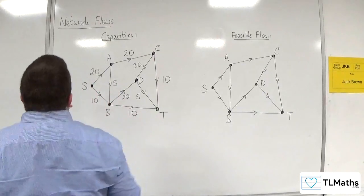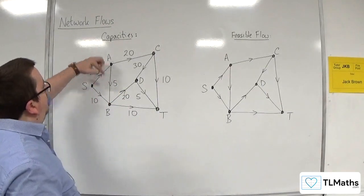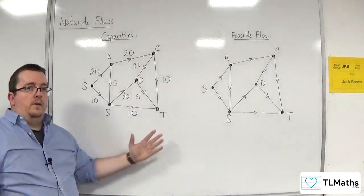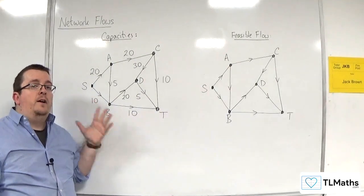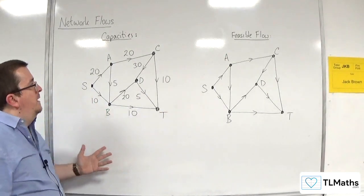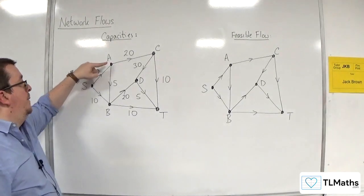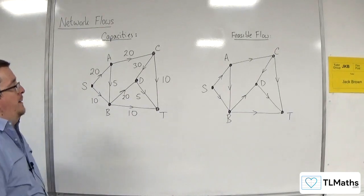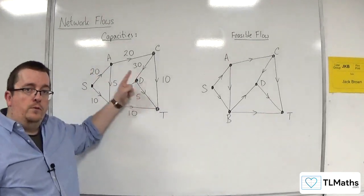Now, you might look at this and go, well Jack, you've got 20 going into A, and 5 and 20 coming out. But this isn't showing a flow through the network. This is showing the capacities of the arcs. So in the feasible flow, I can't have 20 going in and 25 coming out. But this is not showing a flow, just to be clear.